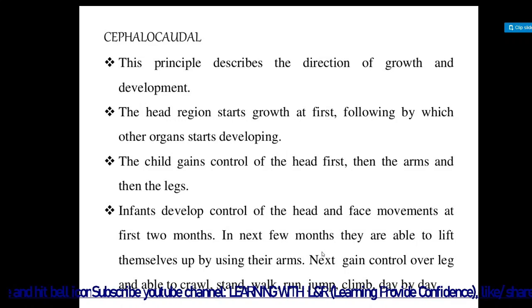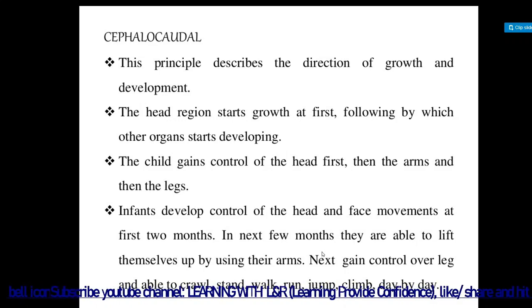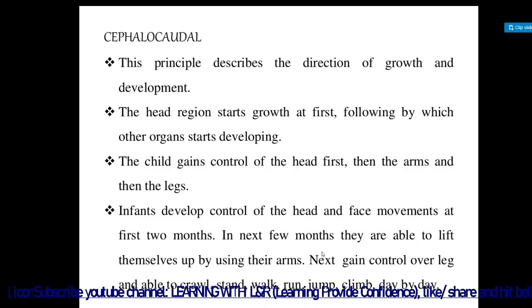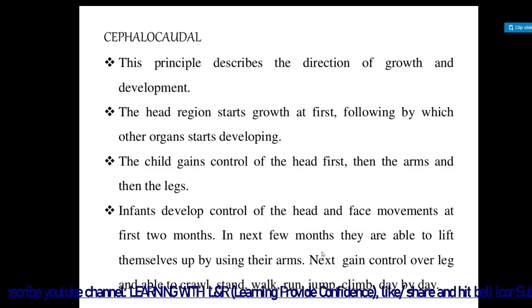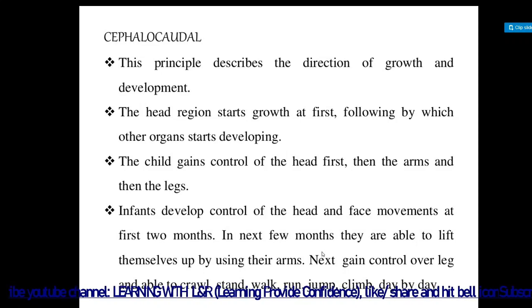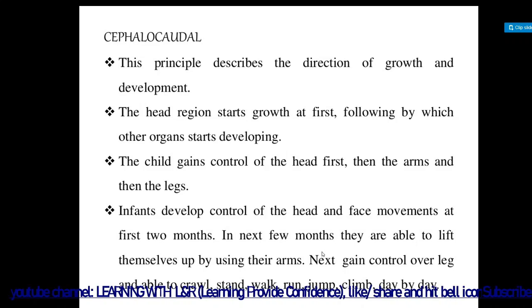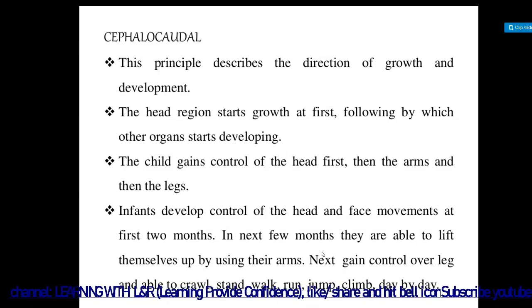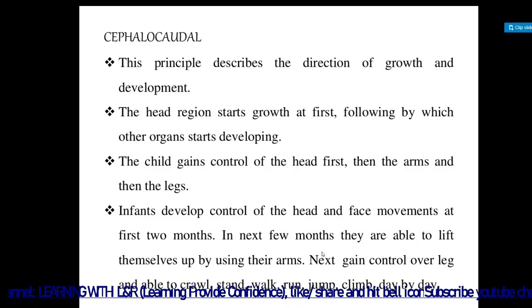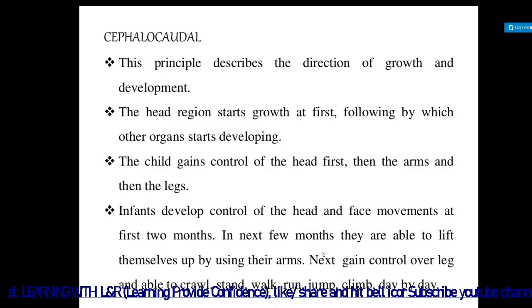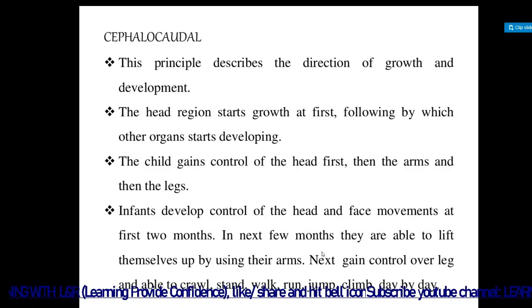The head region starts growth first, followed by which other organs start developing. The child gains control of the head first, then the arms, then the legs. After about five months, the child is able to hold their head in balance, and after that they can balance the other parts of their body.